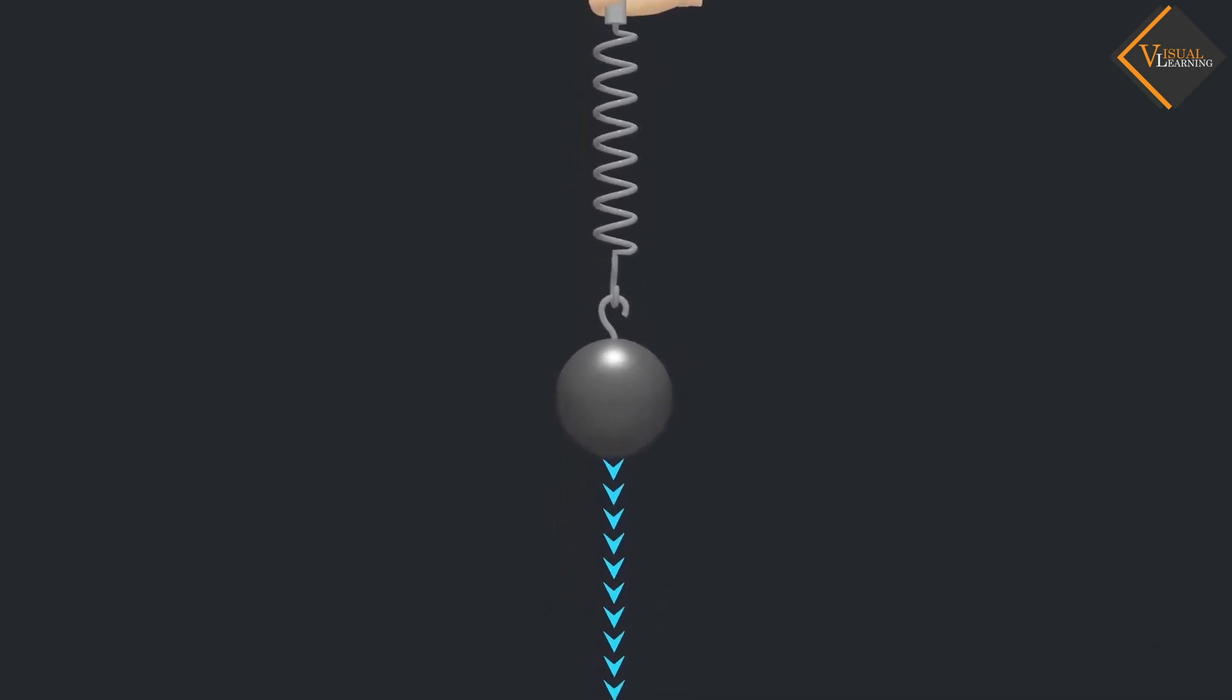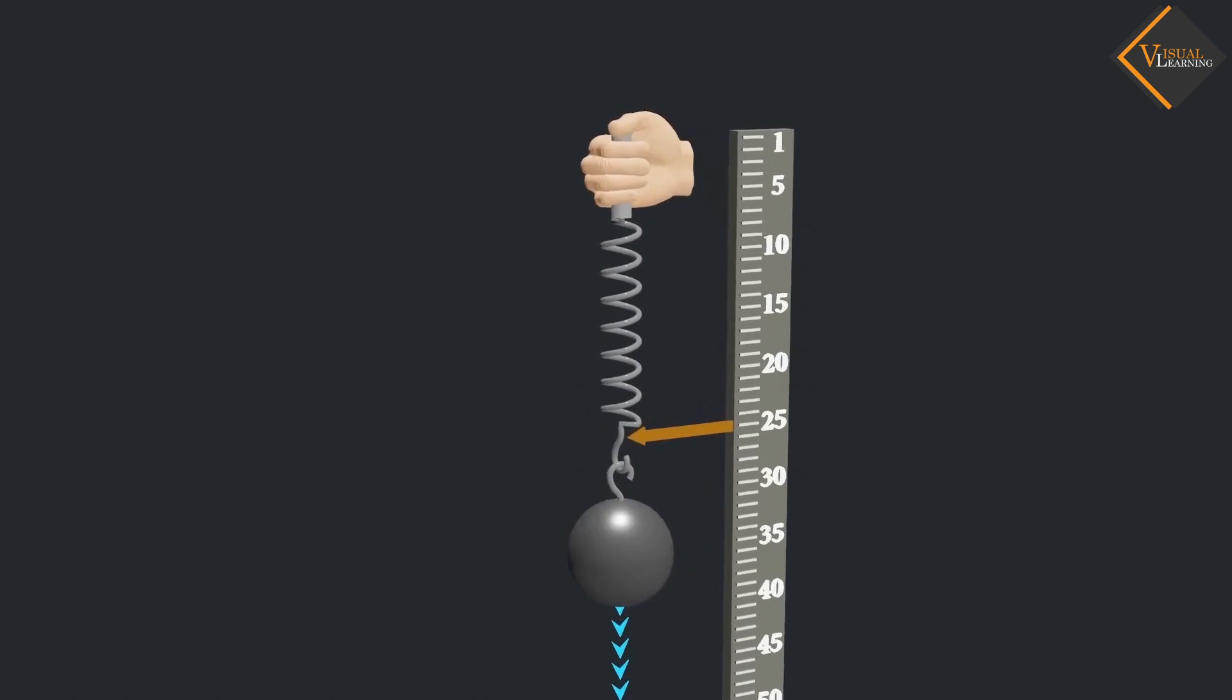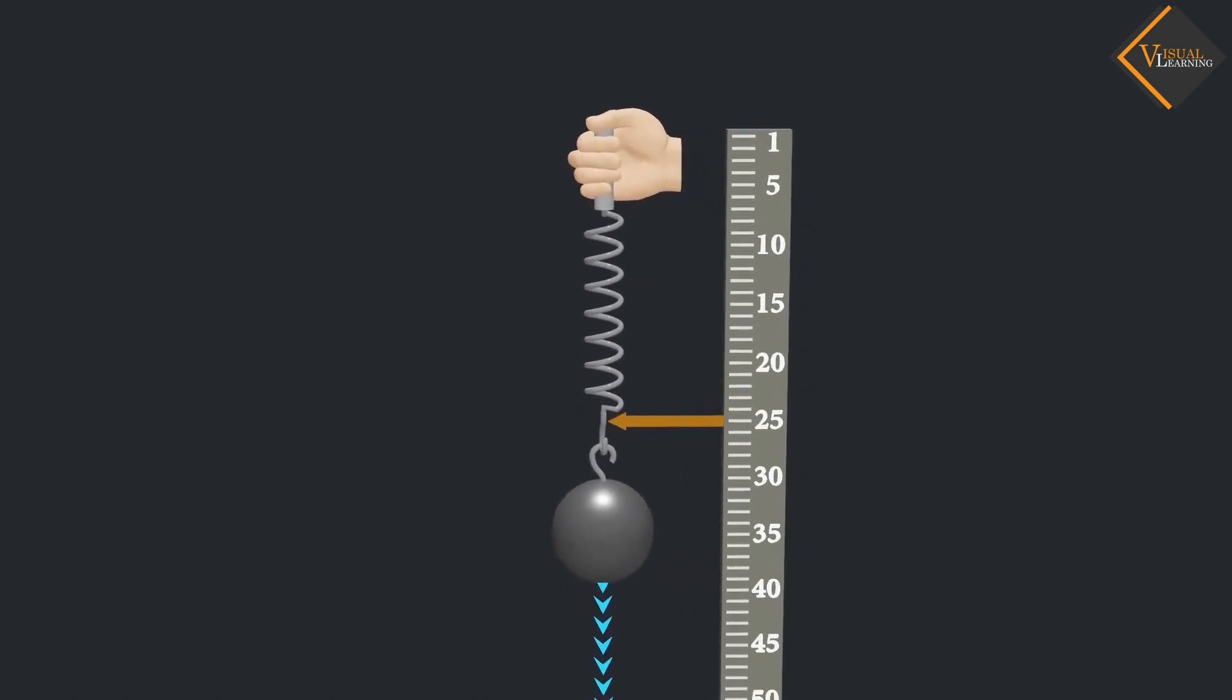We have learnt that weight is the force acting vertically downwards. Because of the weight of the iron ball, it falls downwards. Since the spring is attached to the iron ball, it gets stretched up to a certain limit.